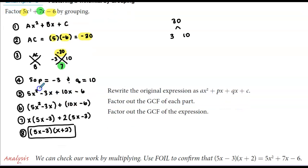So we determined that p is -3 and q is 10. Now we rewrite this as four terms: 5x² - 3x + 10x - 6.